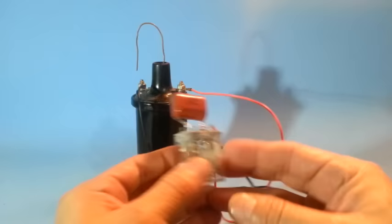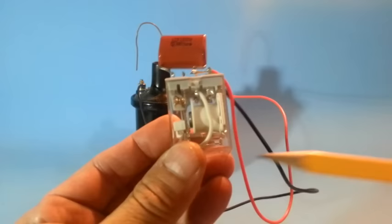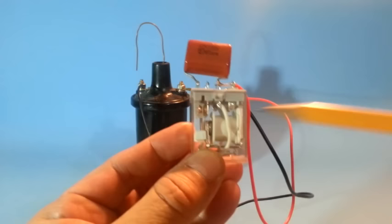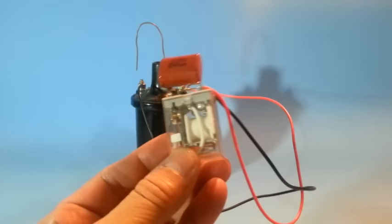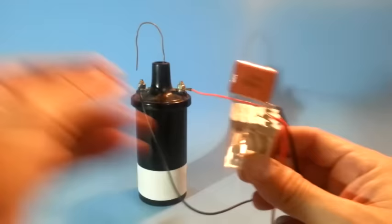We have the primary of the ignition coil connected to the coil of the relay. And here we have the normally close contact and the common of the contacts. The capacitor is connected between the common and the normally close contact.